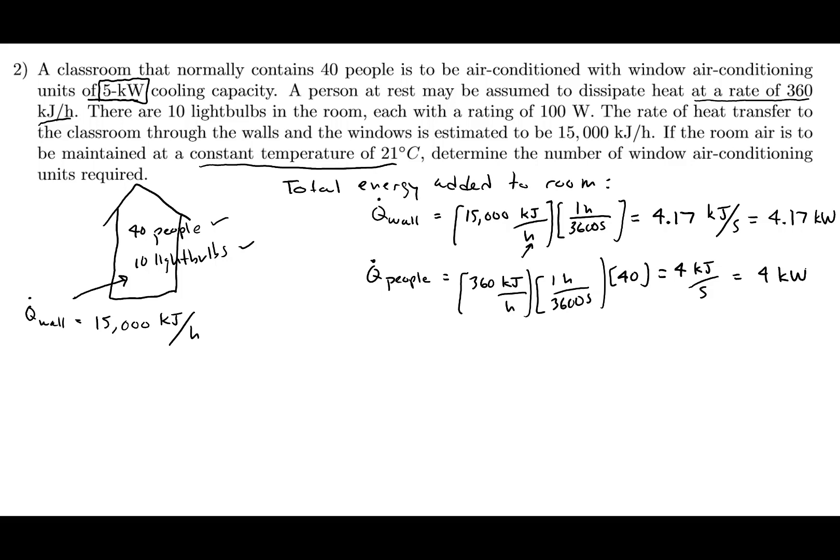The last source of energy to the room are the light bulbs. Q lights is equal to... the lights are 100 watts, so that's 100 joules per second. There's 10 of them, so I'm going to multiply this by 10. That works out to 1 kilojoule per second, which is equal to 1 kilowatt.